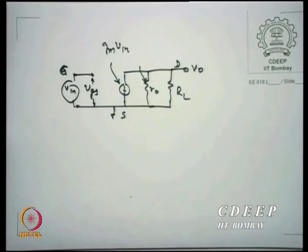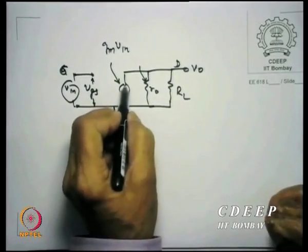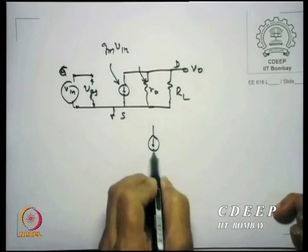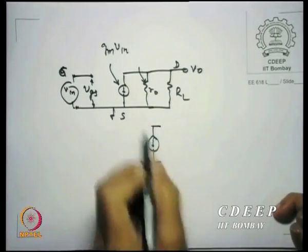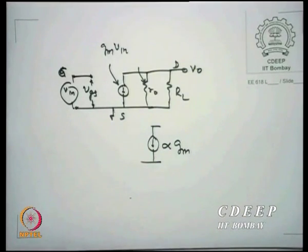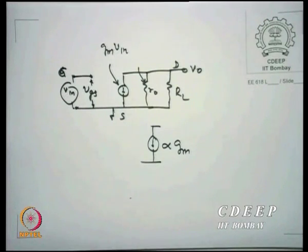My worry is: if in a circuit I have a current source, this current source is a function of gm, which essentially means it has something to do with the device as well as the amount of biasing. Since gm is what is most worrying me, I would like to have a model of a transistor which will give me an equivalent of the gm expression, because at the end of the day I can only solve something numerical.